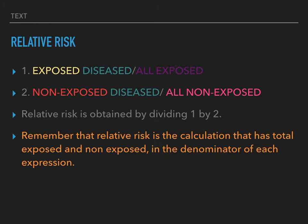Relative risk calculation involves about three steps. The first is dividing the exposed diseased subjects by all exposed subjects. The second step involves dividing non-exposed diseased subjects by all non-exposed subjects. And relative risk is obtained by dividing step one by step two.